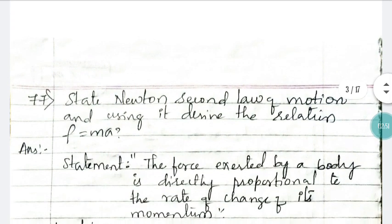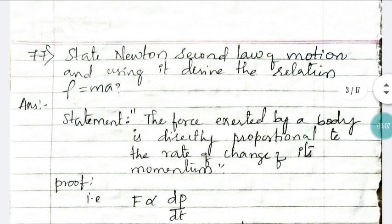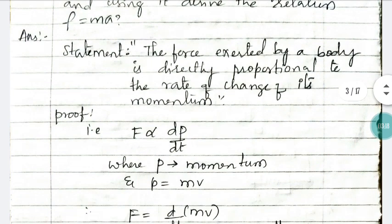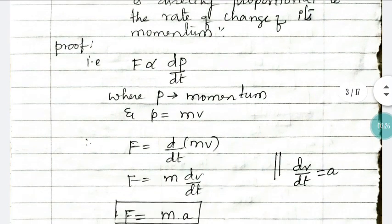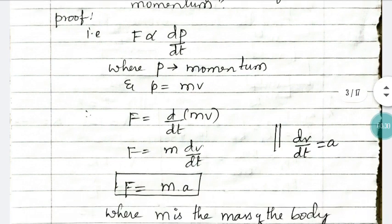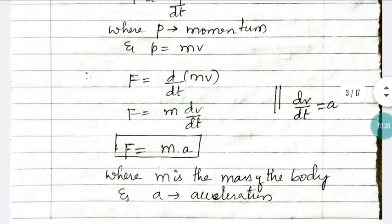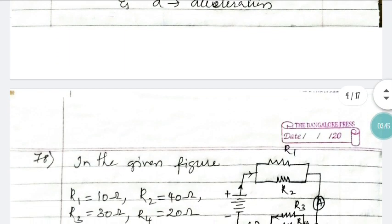Question 77: state Newton's second law of motion and using it derive the relation F = ma. Newton's second law states that the force exerted by a body is directly proportional to the rate of change of its momentum. Since p = mv, substitute p and differentiate — the rate of change of velocity is acceleration a. This gives the final derivation F = ma.